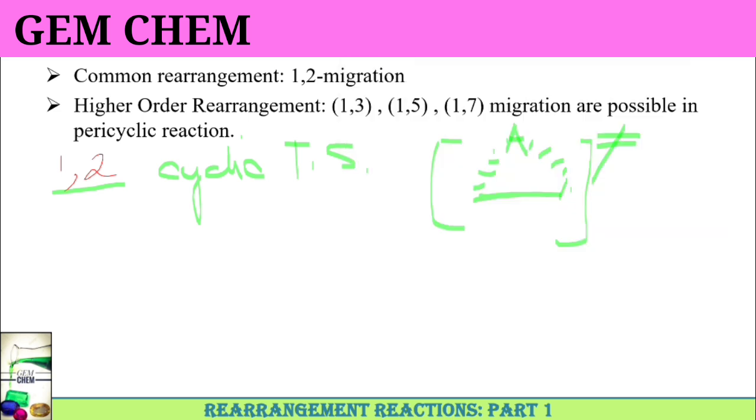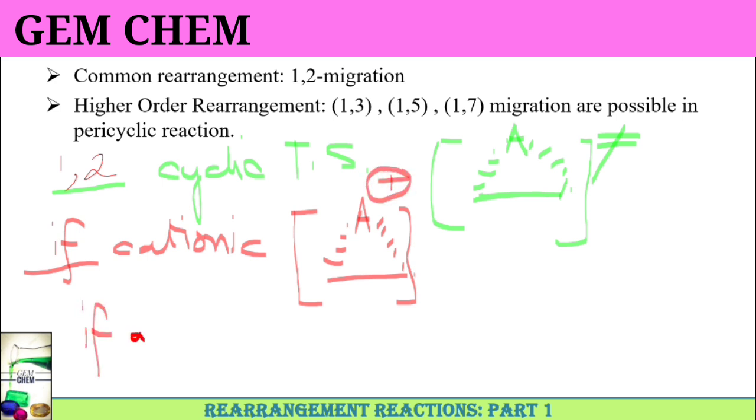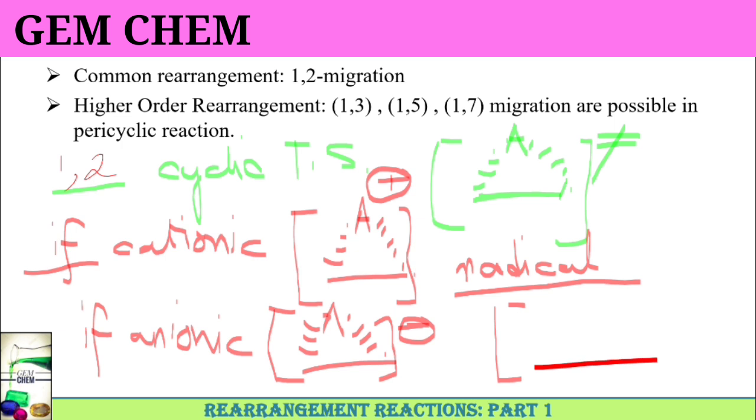If we try to draw for cationic migration, you have bond breaking here and bond making taking place here with a positive charge. If you consider it as anionic, just the charge changes and the transition state looks like this. If you consider it as radical pathway, that is radical rearrangement, your transition state will look like this and you have a dot here. These are the three types of transition state formation for different rearrangement. Here we are considering only the transition state; intermediate is not being discussed.